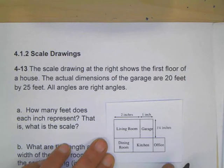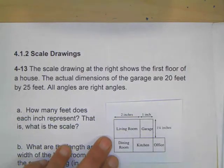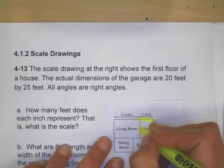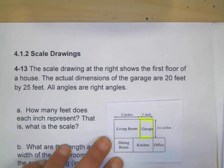They often use scale drawings for blueprints of houses. Here's an example of a scale drawing that shows the first floor of a house. The actual dimensions of the garage are 20 feet by 25 feet. I'm going to highlight that I'm looking at this part of the house right here, and it says all angles are right angles.